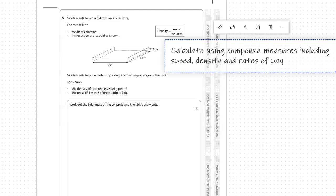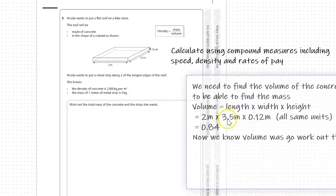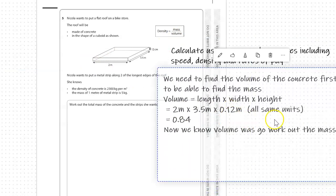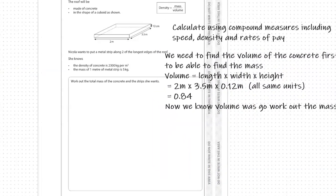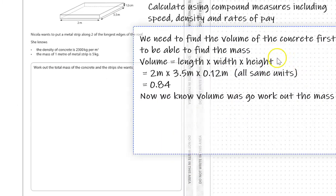So we've got some information and we need to work out others before getting to the final step. We know the density, but we want to find the mass. So we know we're going to have to work out volume first. We have enough information to do that, so we need to find the volume of the concrete in order to find the mass.